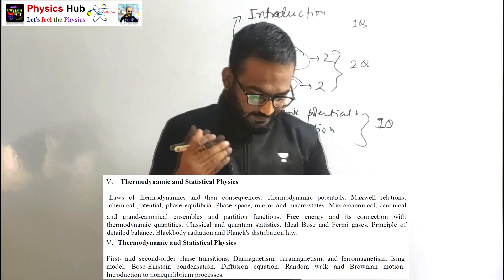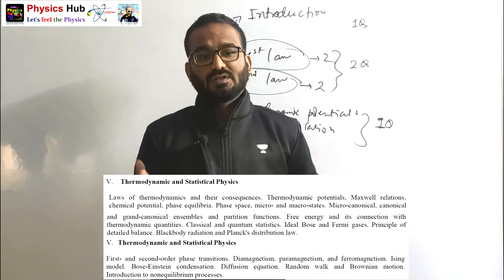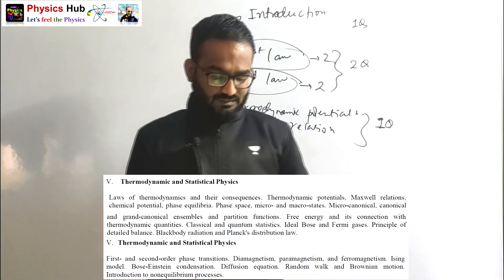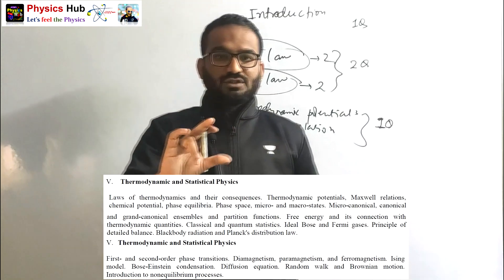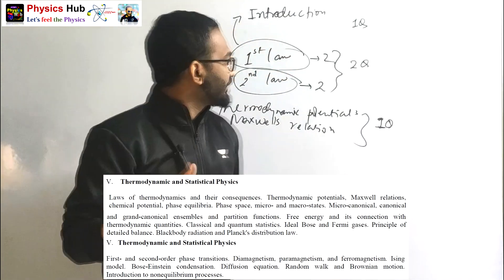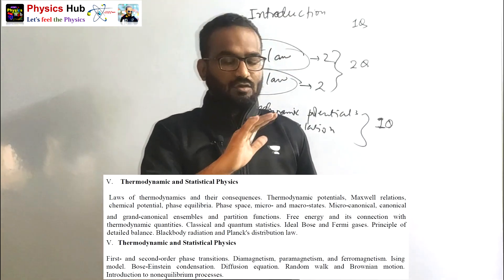Then blackbody radiation, principle of detailed balance, and Planck's distribution law - this will take maximum one or two classes. So the core portion, you can see, the syllabus is very easy, nothing complicated is there.